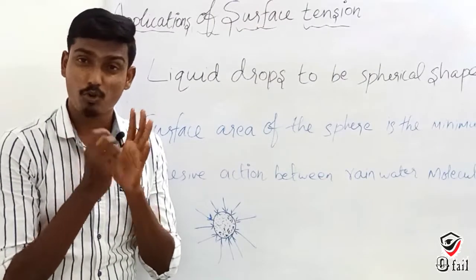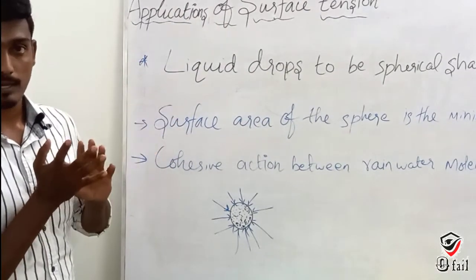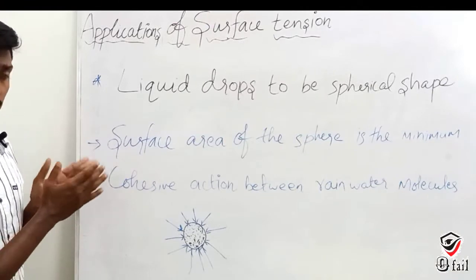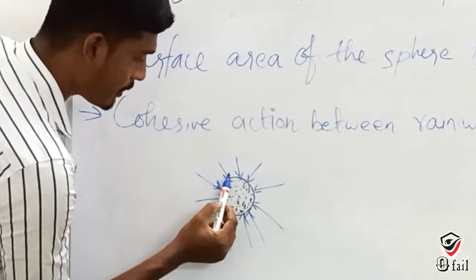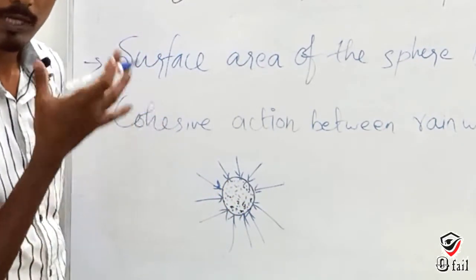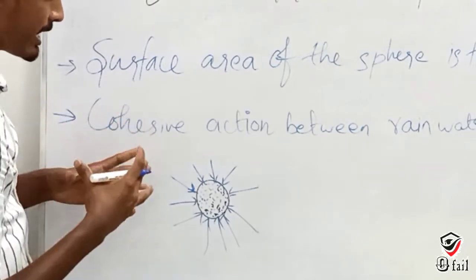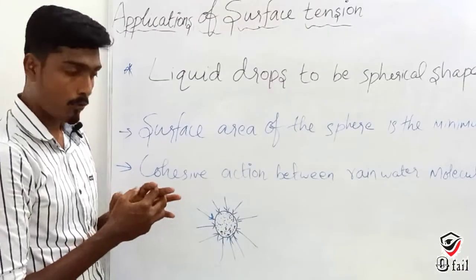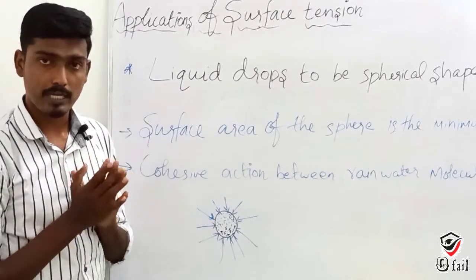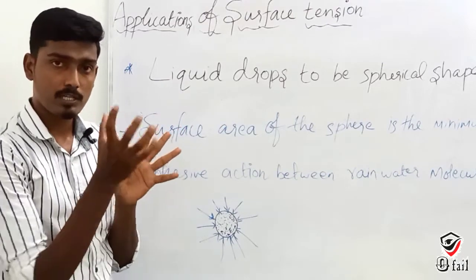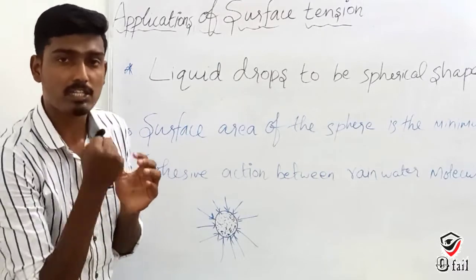The next application is the shape of raindrops. When rain falls through the atmosphere, air pushes from all directions. The water molecules don't like the air molecules, so all water molecules pull tightly together — that is the cohesion force, which is the attraction between similar molecules.